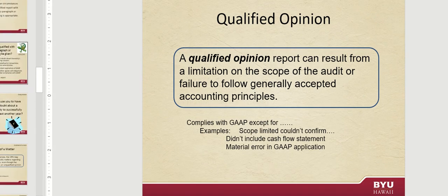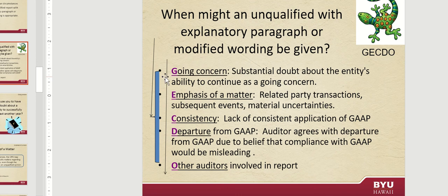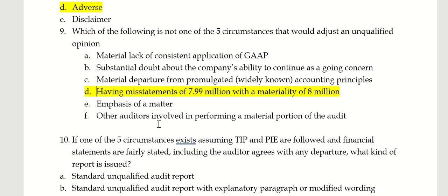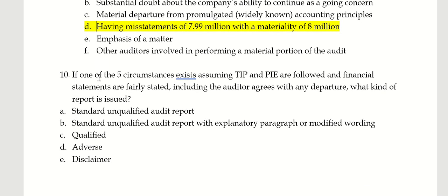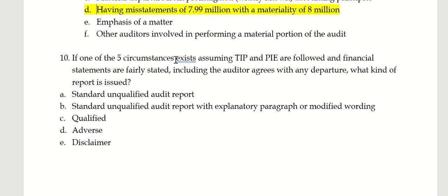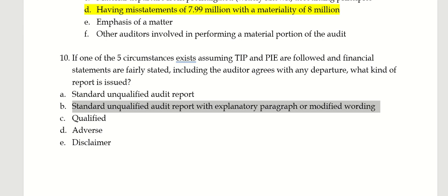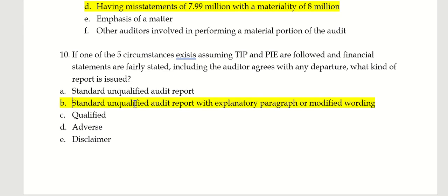So let's go back to the GECTO slide: Going concern, Emphasis of a matter, Consistency, Departure, and Other auditors. So the only one is D there — if one of the five circumstances exists, assuming TIP and PIE are followed and financial statements are fairly stated including the auditor agrees with any departure, what kind of report is issued? If they have those circumstances, that's when we just modify the wording. So those are your answers for the 10 questions.